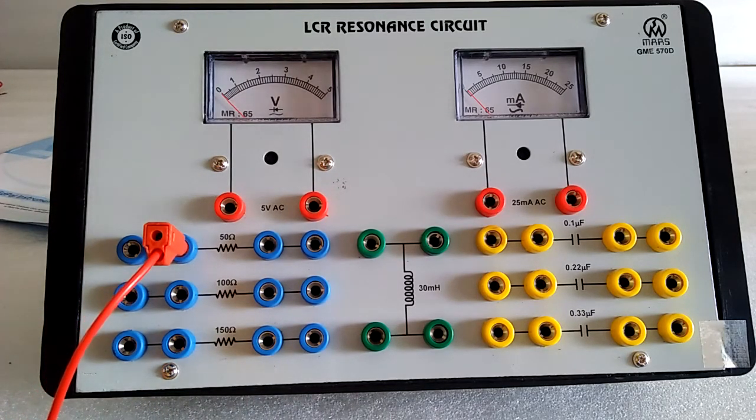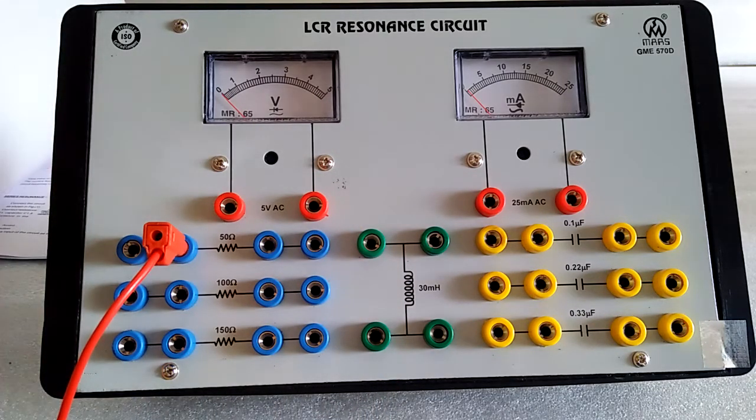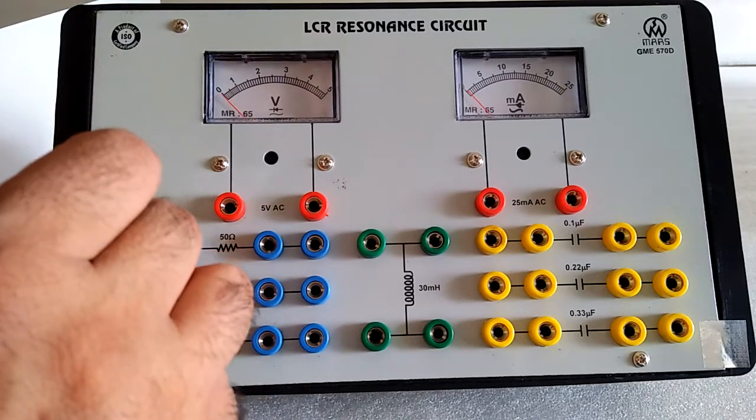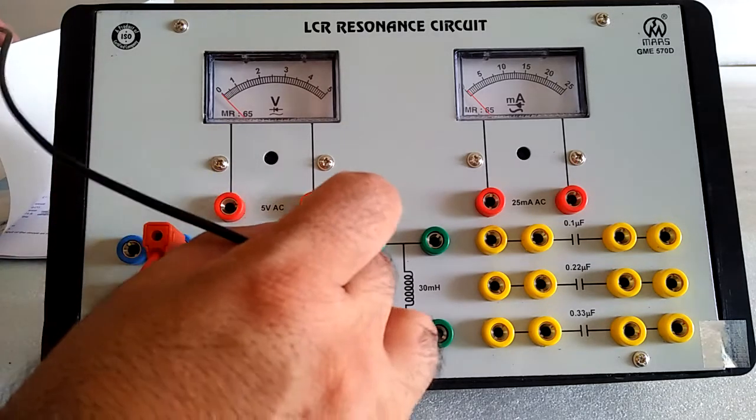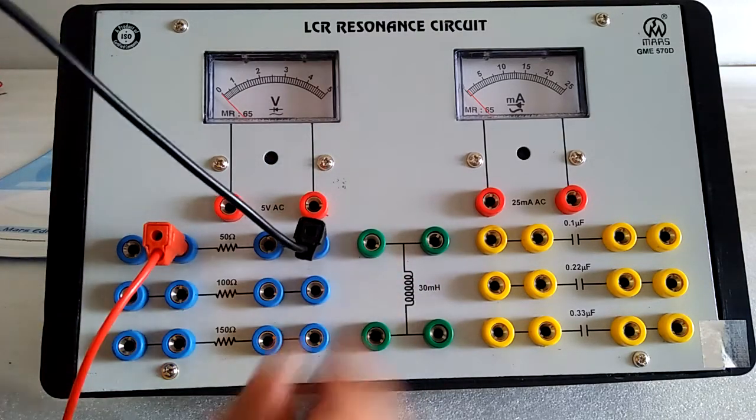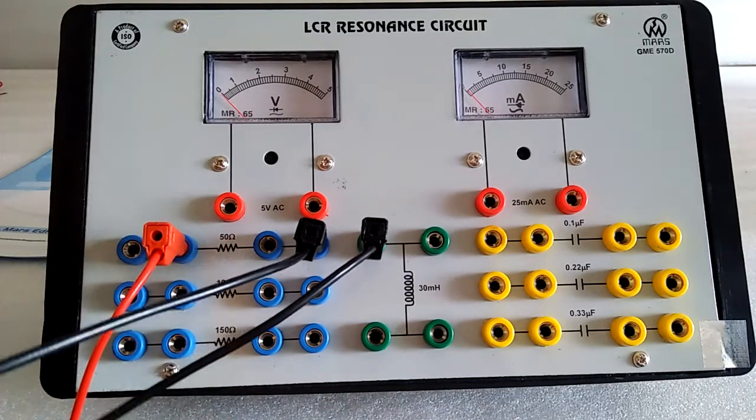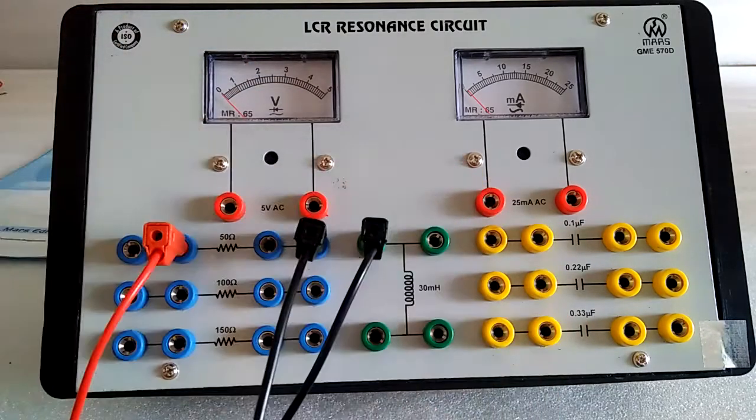Starting patching is this. Here we have resistance, then the resistance goes to the inductance. Inductance is fixed and resistance, we have three options and the capacitance also has three options.